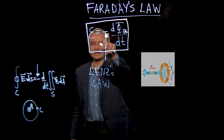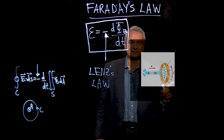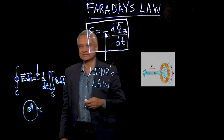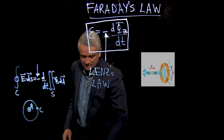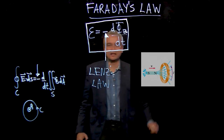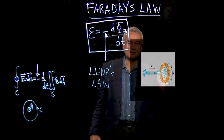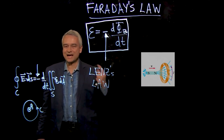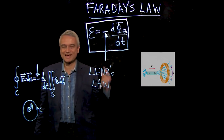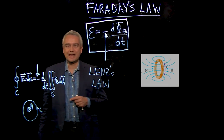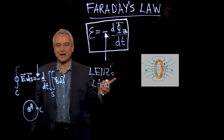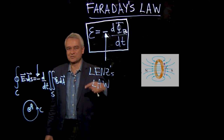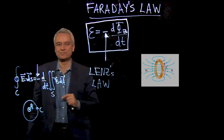Now, this minus sign tells me the direction of this current. If I had a plus sign here, the current would flow the other way. But the direction of this current tells me that when I think about this loop of wire with a current flowing through it, that current makes a magnetic field of its own. And the direction of the current tells me that the magnetic field created by this loop of wire, which is now carrying a current, has its north pole on the left side.